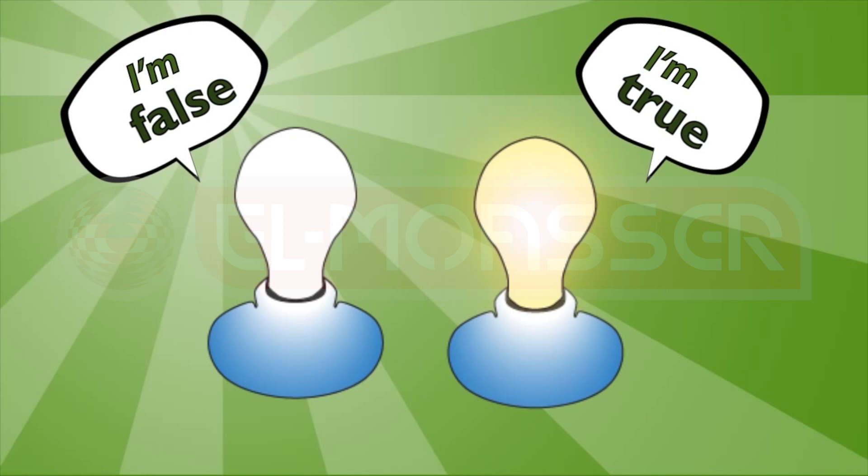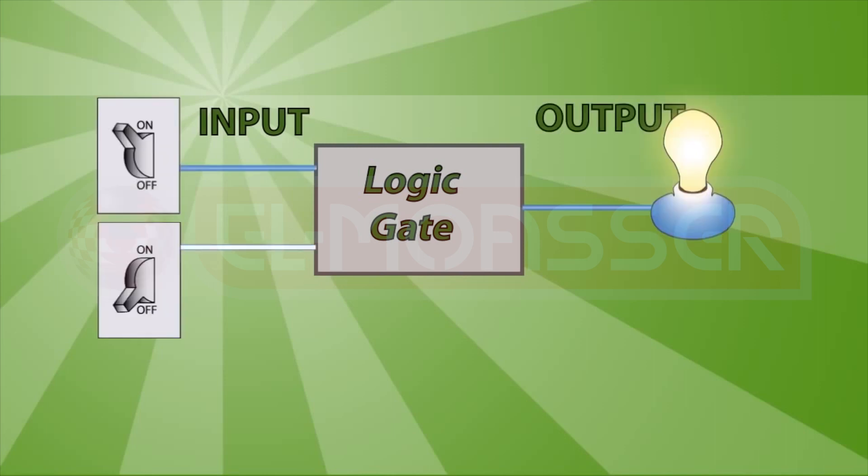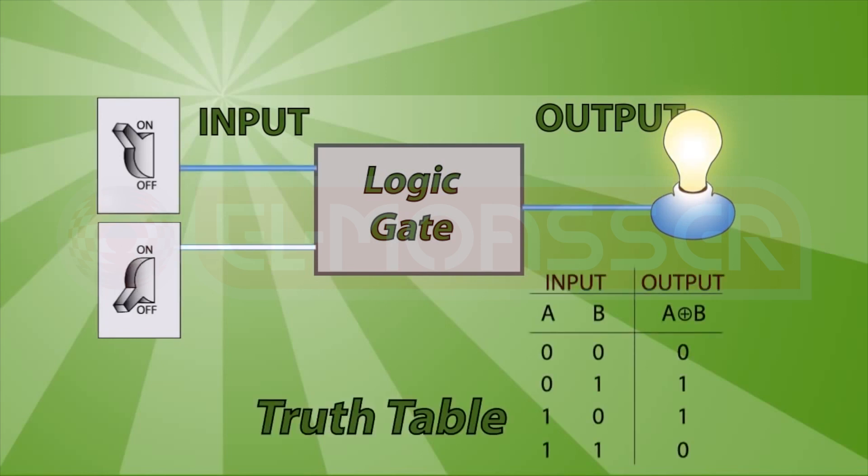In this case, some values enter the gate. We call those inputs. One value exits. We call that the output. The output is affected by the input depending on the gate's behavior. We describe this behavior with a truth table.